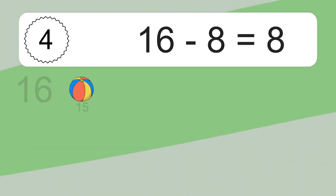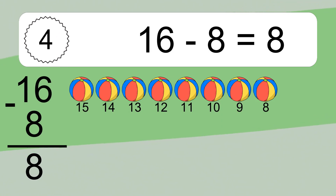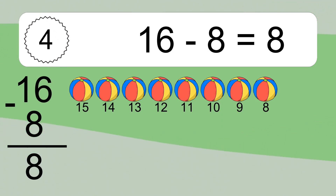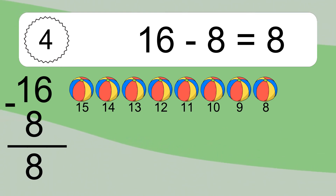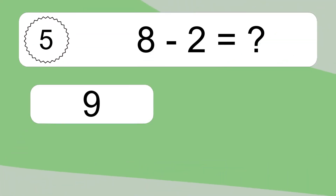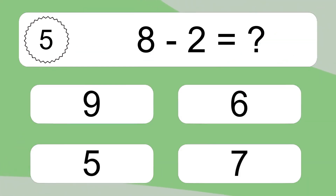Sixteen minus eight equals what? Sixteen minus eight equals eight. Let's count it: fifteen, fourteen, thirteen, twelve, eleven, ten, nine, eight. Eight minus two equals what?